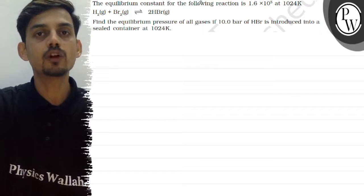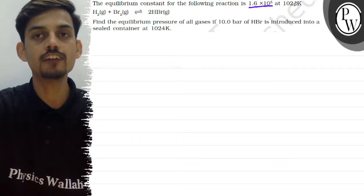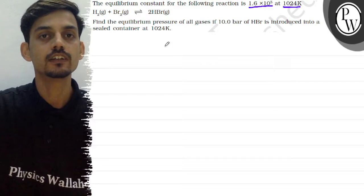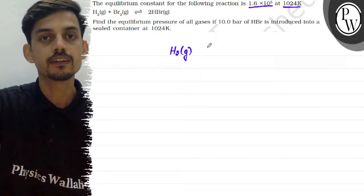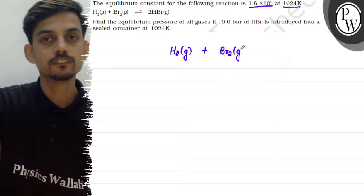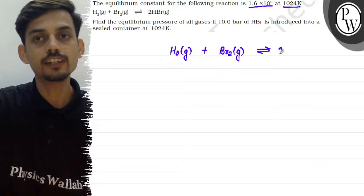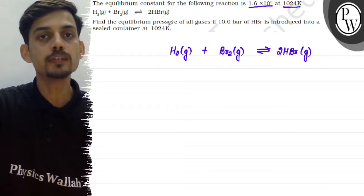The question states the equilibrium constant for the following reaction is 1.6 × 10^5 at 1024 Kelvin. The reaction is H₂(g) + Br₂(g) ⇌ 2HBr(g). The question asks us to find the equilibrium pressure